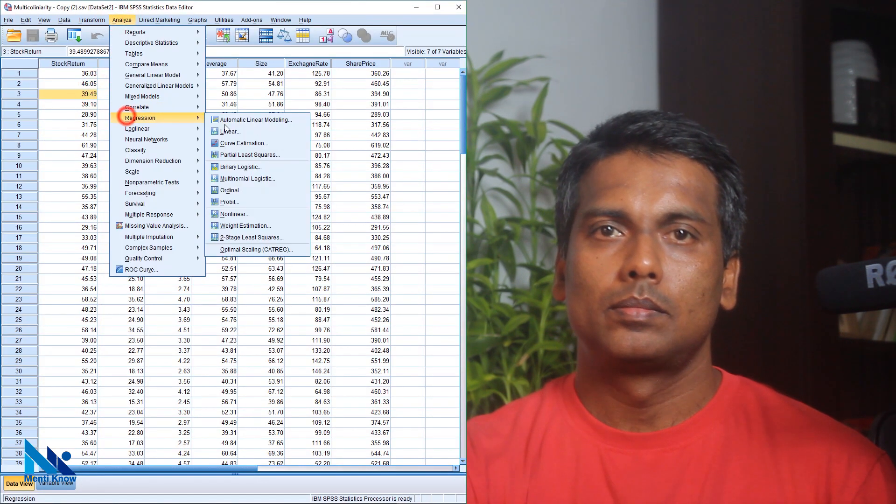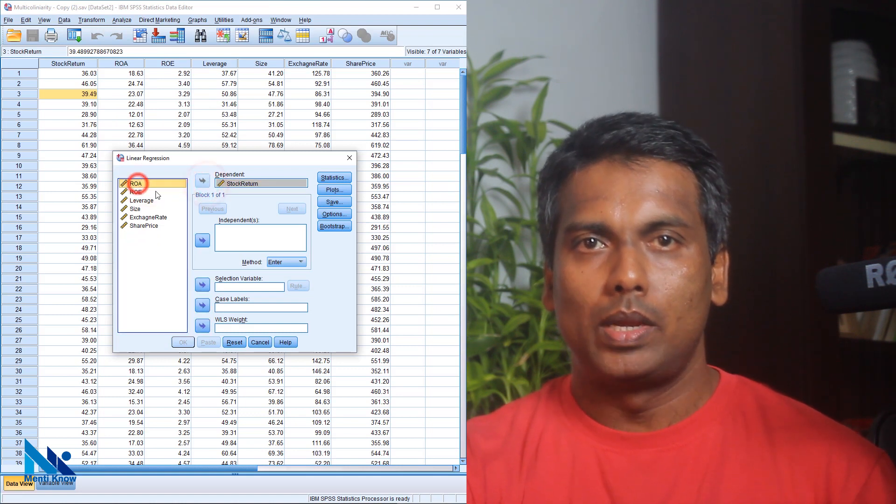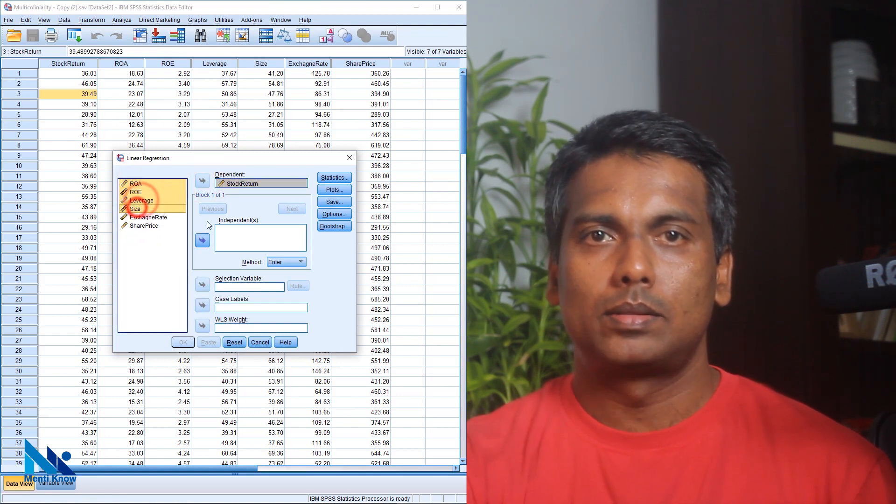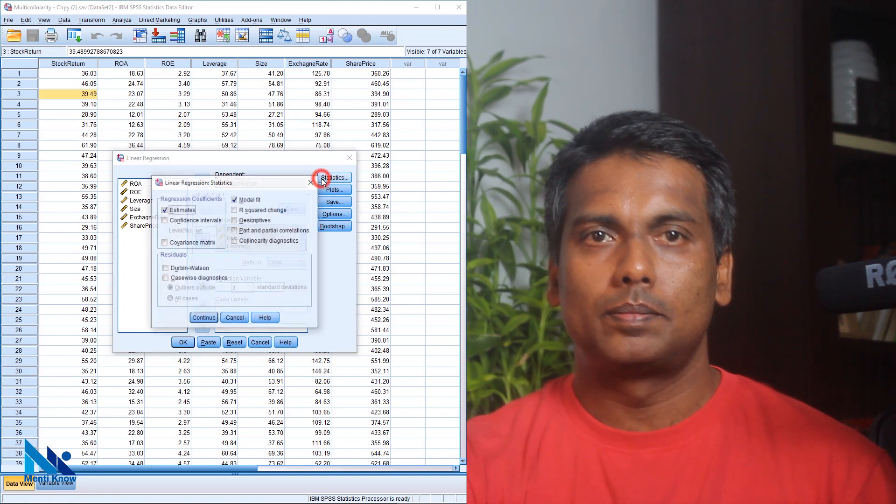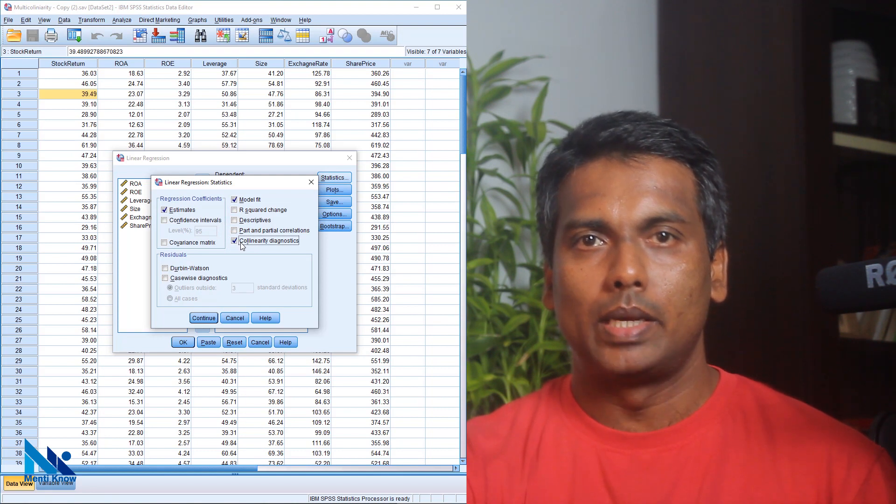Let's run the regression. Move the dependent variable into dependent and my 4 independent variables into independence. Then click statistics. Select collinearity diagnostics. This will add VIF values into our regression results.